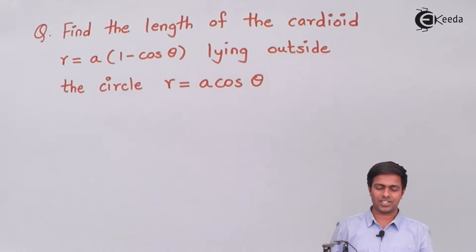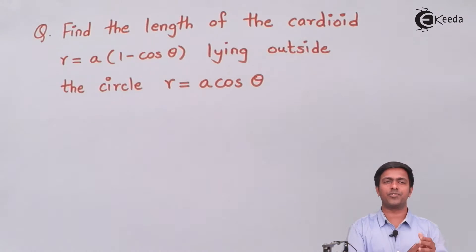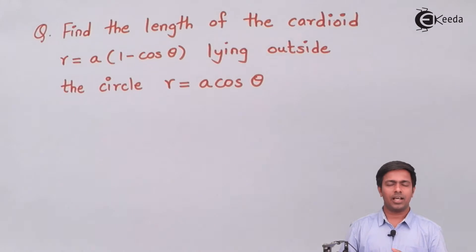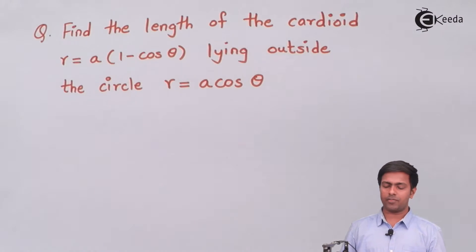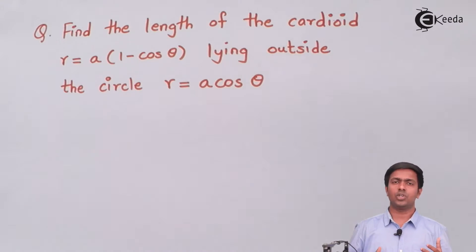Before starting the solution, I'm sure you have seen my previous video where I covered the different types of cardioid and their equations, as well as different types of circles and their equations. We will use those concepts here. We have the equation of the cardioid as r equal to a into (1 minus cos theta) and we have to find the length of that cardioid which is lying outside the circle. So first we need to draw it.